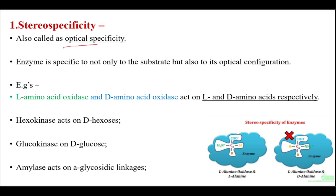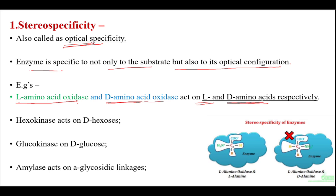Stereospecificity is also called optical specificity. The enzyme is specific not only to the substrate but also to its optical configuration. For example, L-amino acid oxidase acts only on the L-amino acid, whereas D-amino acid oxidase acts only on the D-amino acid.